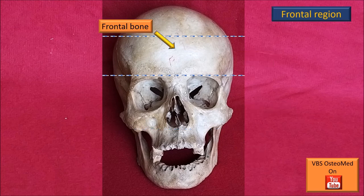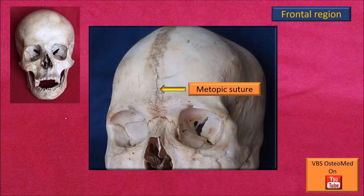The chief bone of the frontal region is the frontal bone, shown here by that arrow. The frontal bone's two sides are usually fused in the adult. Sometimes there may be a suture line, in which case it's called the metopic suture.